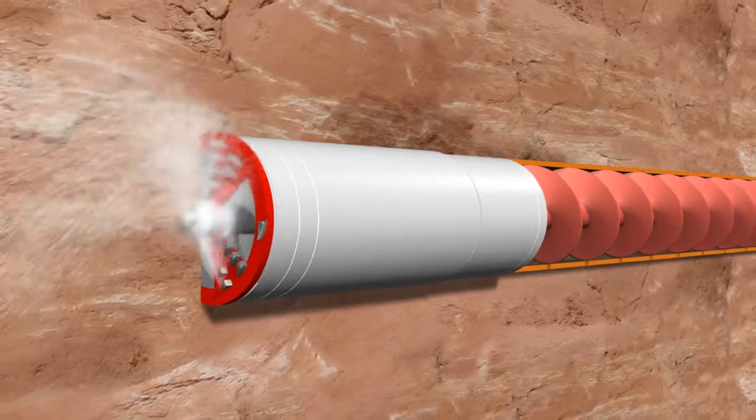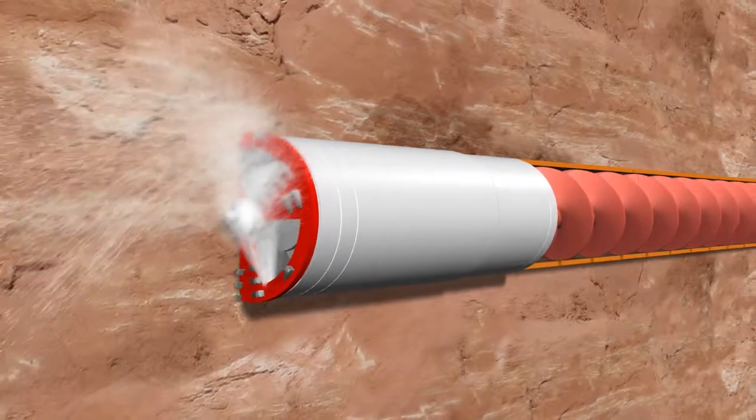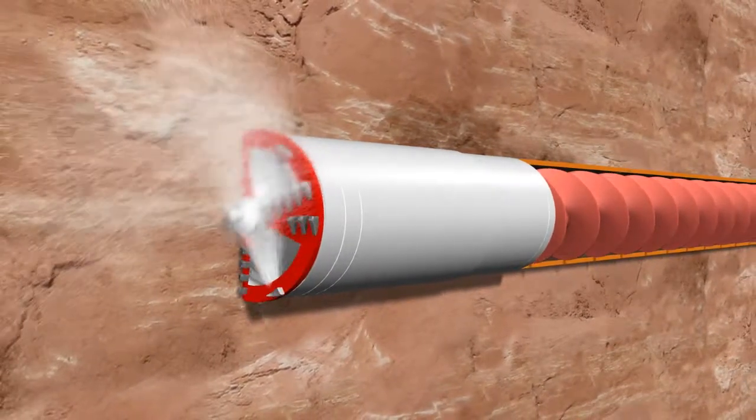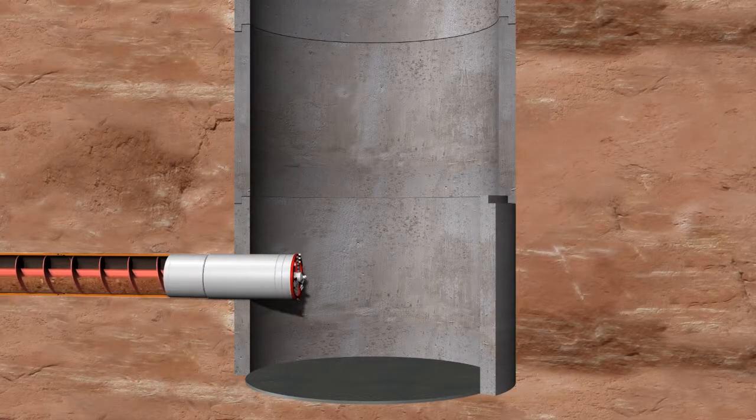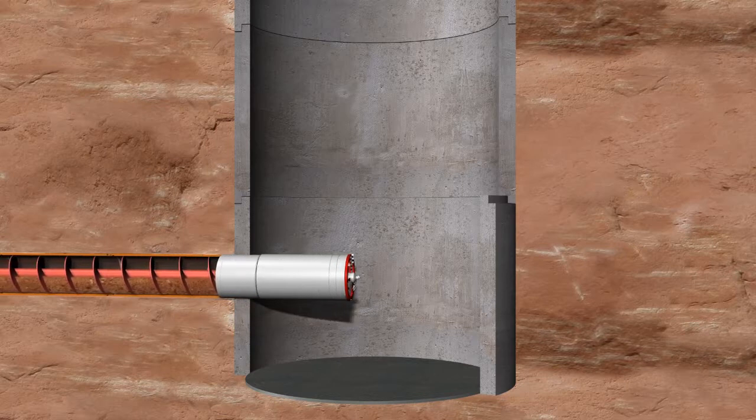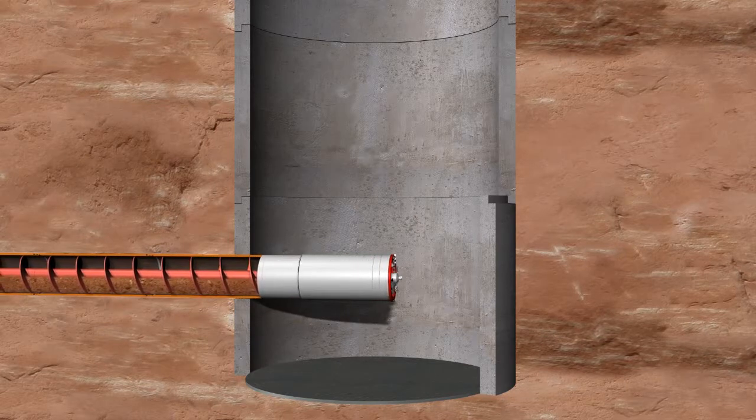If necessary, it's possible to activate a high-pressure water flushing system behind the cutting wheel. After arriving on target at the reception, the front steer is disconnected and lifted out of the shaft through the seal.